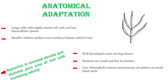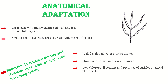Now we will come to anatomical adaptations — the adaptations found inside the plant body. The cells in the stems are large, tightly packed with less intercellular space, and have a highly elastic cell wall. The surface area is relatively less; the surface-to-volume ratio is less, so lesser water will be lost. There is also well-developed water-storing tissue.